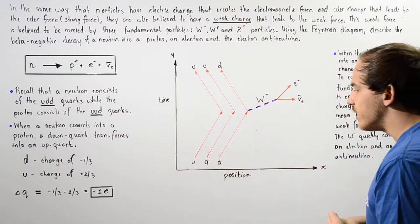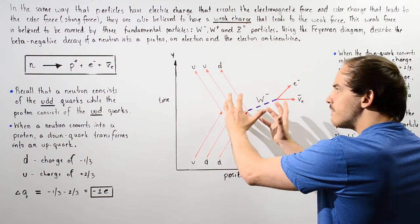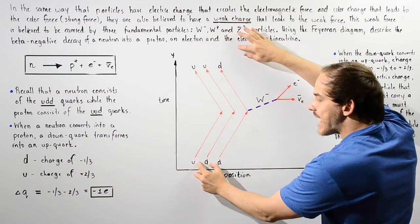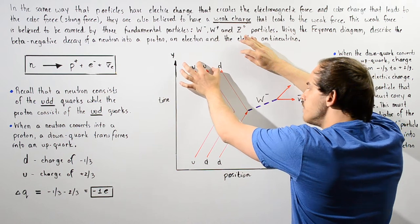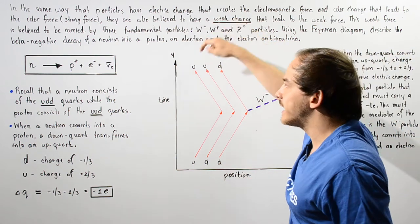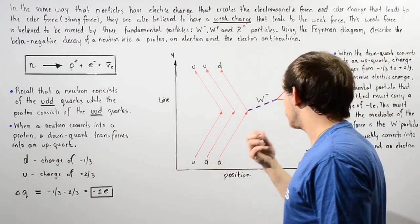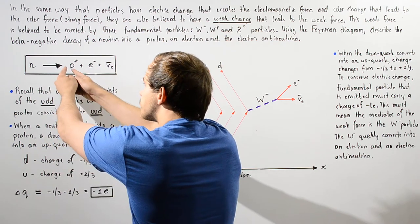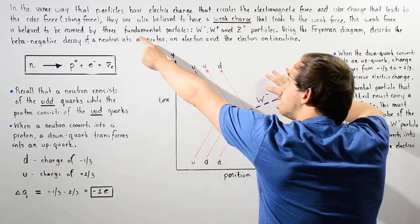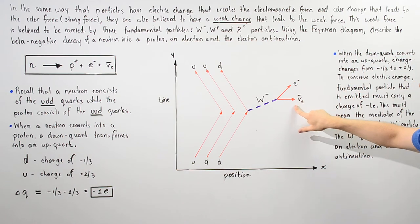Examining the Feynman diagram, we have our up, down, and down quarks representing the neutron. As the neutron travels, it decays into the proton given by up, up, and down quarks. We see that the down quark is transformed into the up quark, in the process releasing the virtual fundamental particle known as the W negative. Virtual simply means we cannot actually observe this experimentally — it takes place very, very quickly. The proton is produced, but also an electron and the electron anti-neutrino, so the W negative must transform into the electron as well as our electron anti-neutrino.